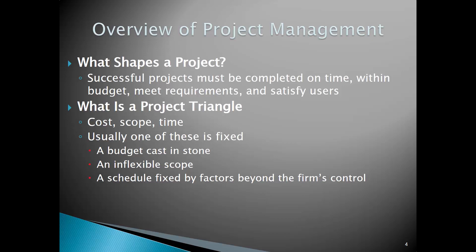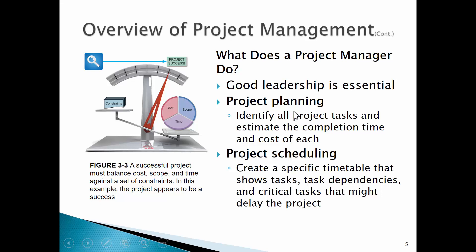The project triangle - cost, scope, and time. Usually one of these is fixed. The budget can be cast in stone, the scope can be cast in stone, or the schedule. We have to fix something. We can't have just a bunch of variables as we do these projects.